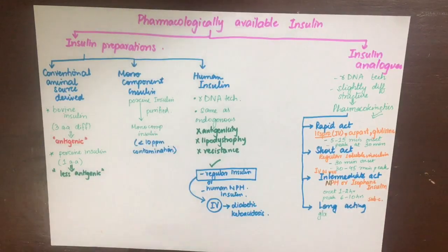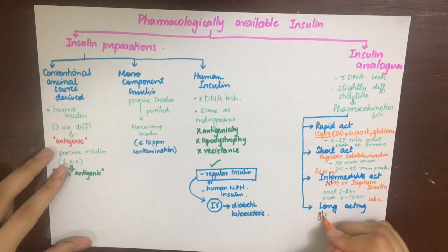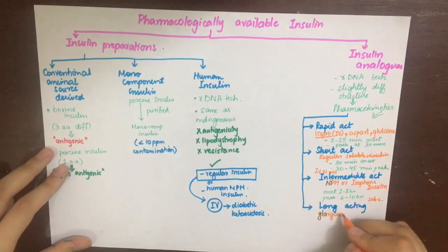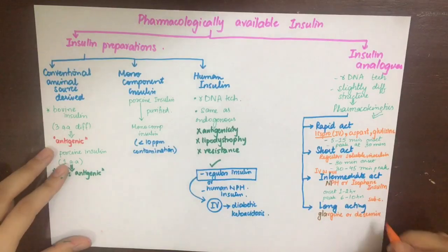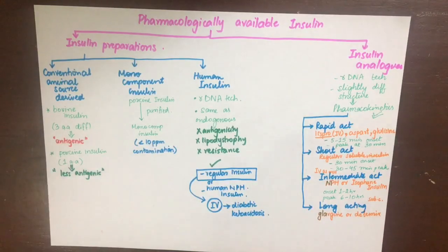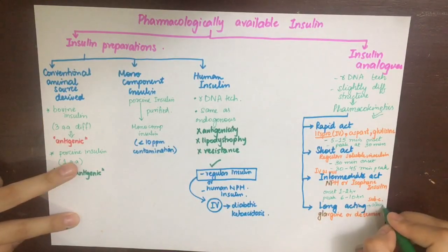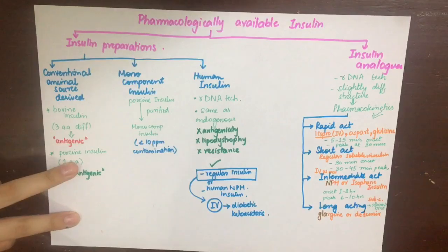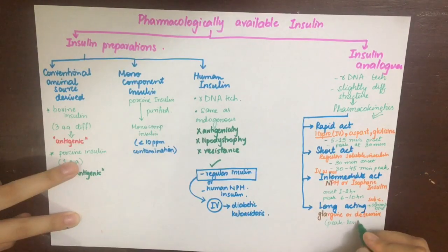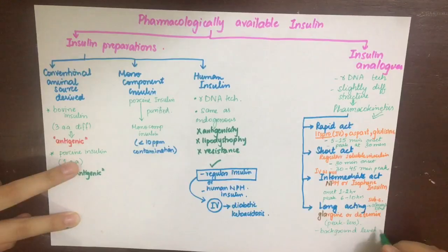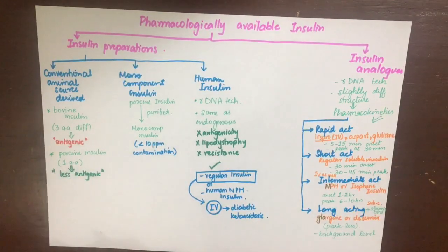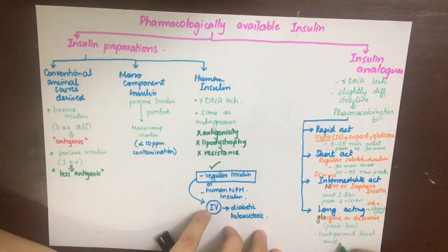The long acting insulins are glargine and detemir. They are extensively bound to albumin, giving them a prolonged action with onset of about 24 hours and no peak — they are peakless. That's why they maintain a constant background level of insulin and have a reduced risk of nocturnal hypoglycemia. However, they are contraindicated in pregnancy.